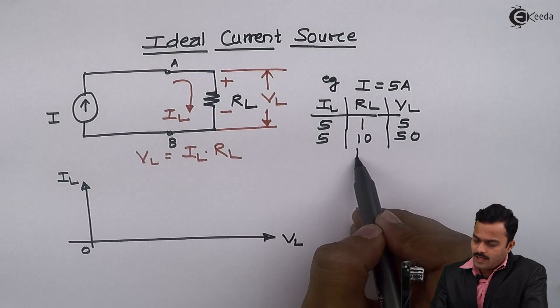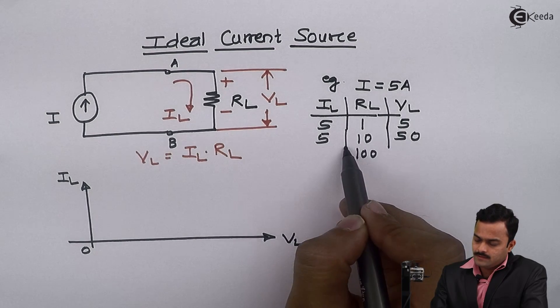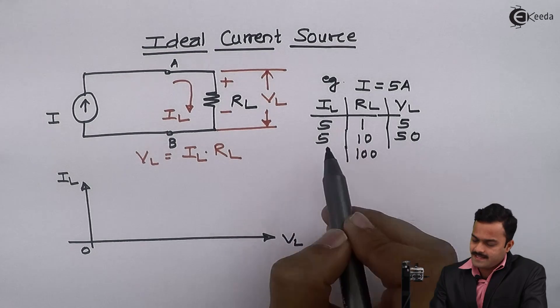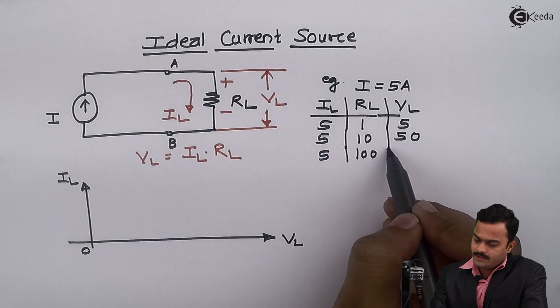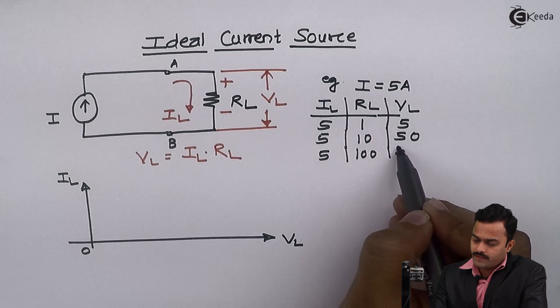Since I and IL are same, 5, so that VL I will get 500 volt.